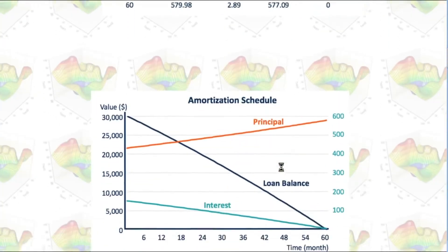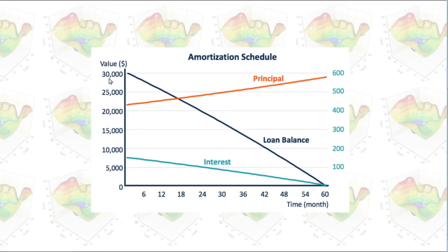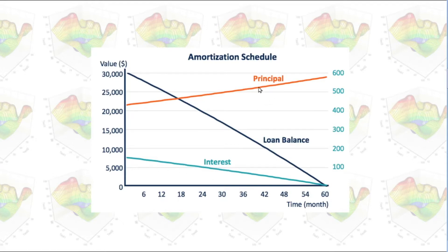Let's take a look at the graph. The beginning balance is $30,000, and when we pay it down after 60 months, the principal and the interest will reach zero. For every month, we'll pay the same amount according to the amortization schedule. You can see the interest portion of this payment will be reduced, but the principal portion will increase.